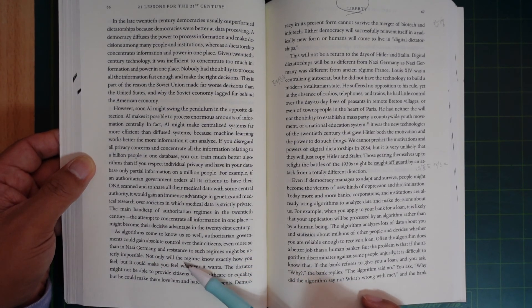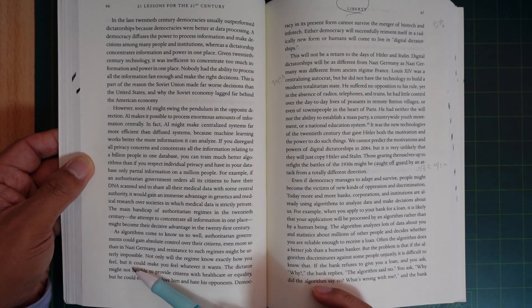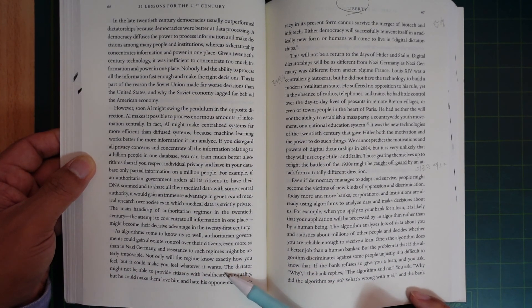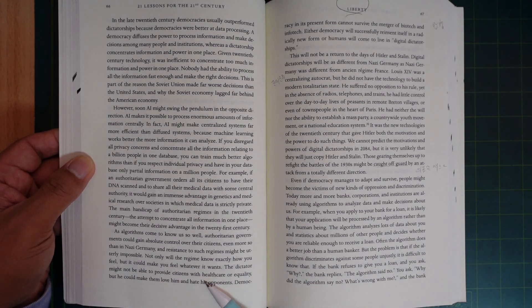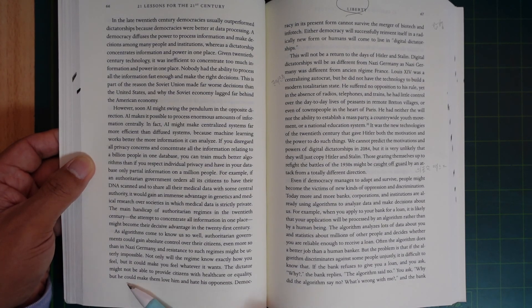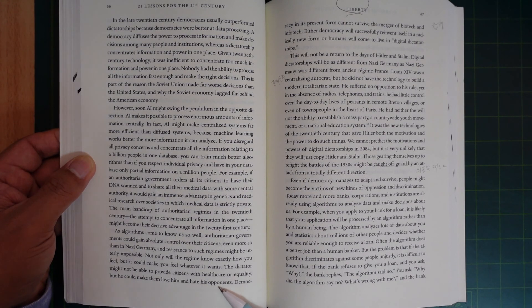Not only will the regime know exactly how you feel, but it could make you feel whatever it wants. The dictator might not be able to provide citizens with healthcare or equality, but he could make them love him and hate his opponents.